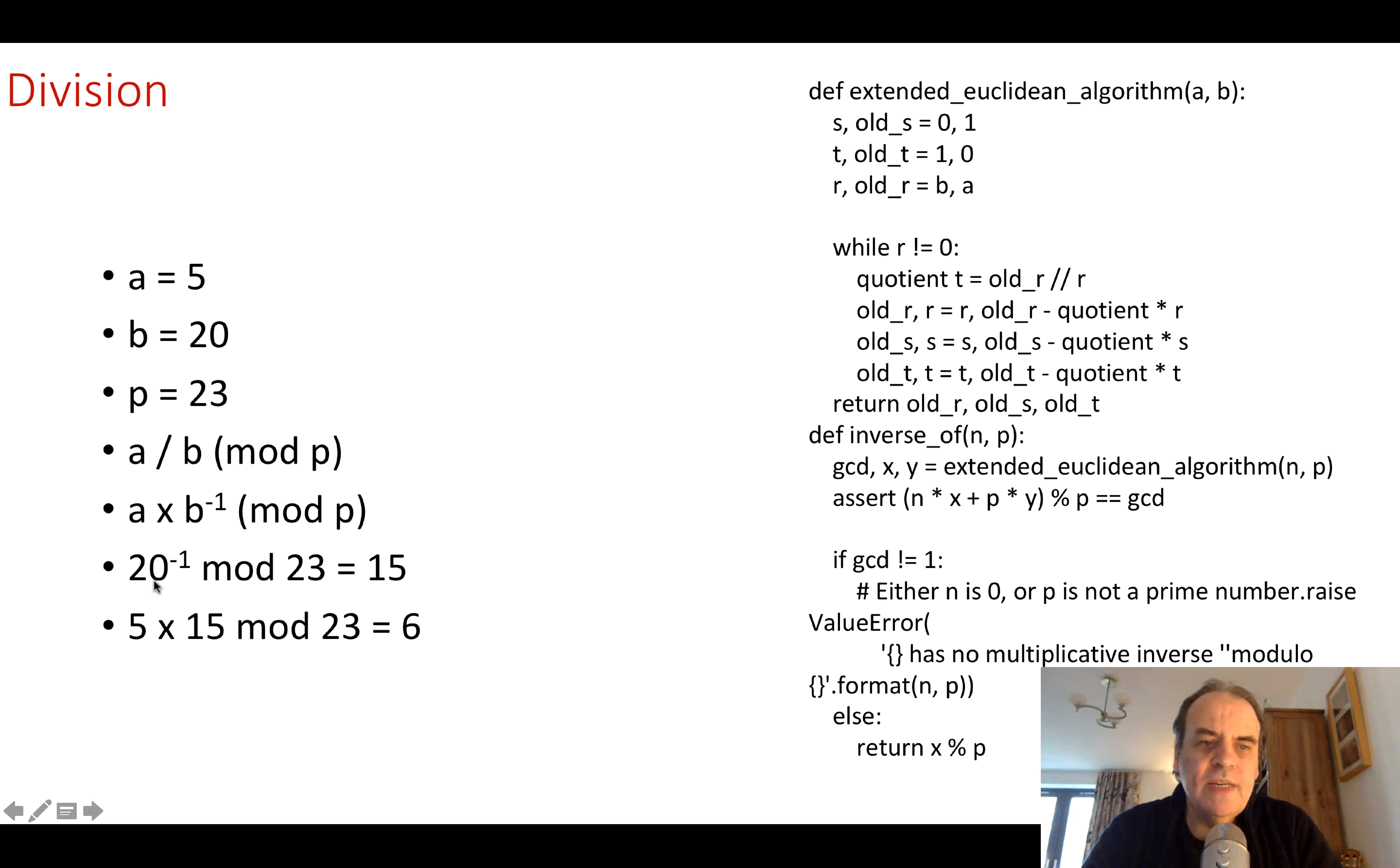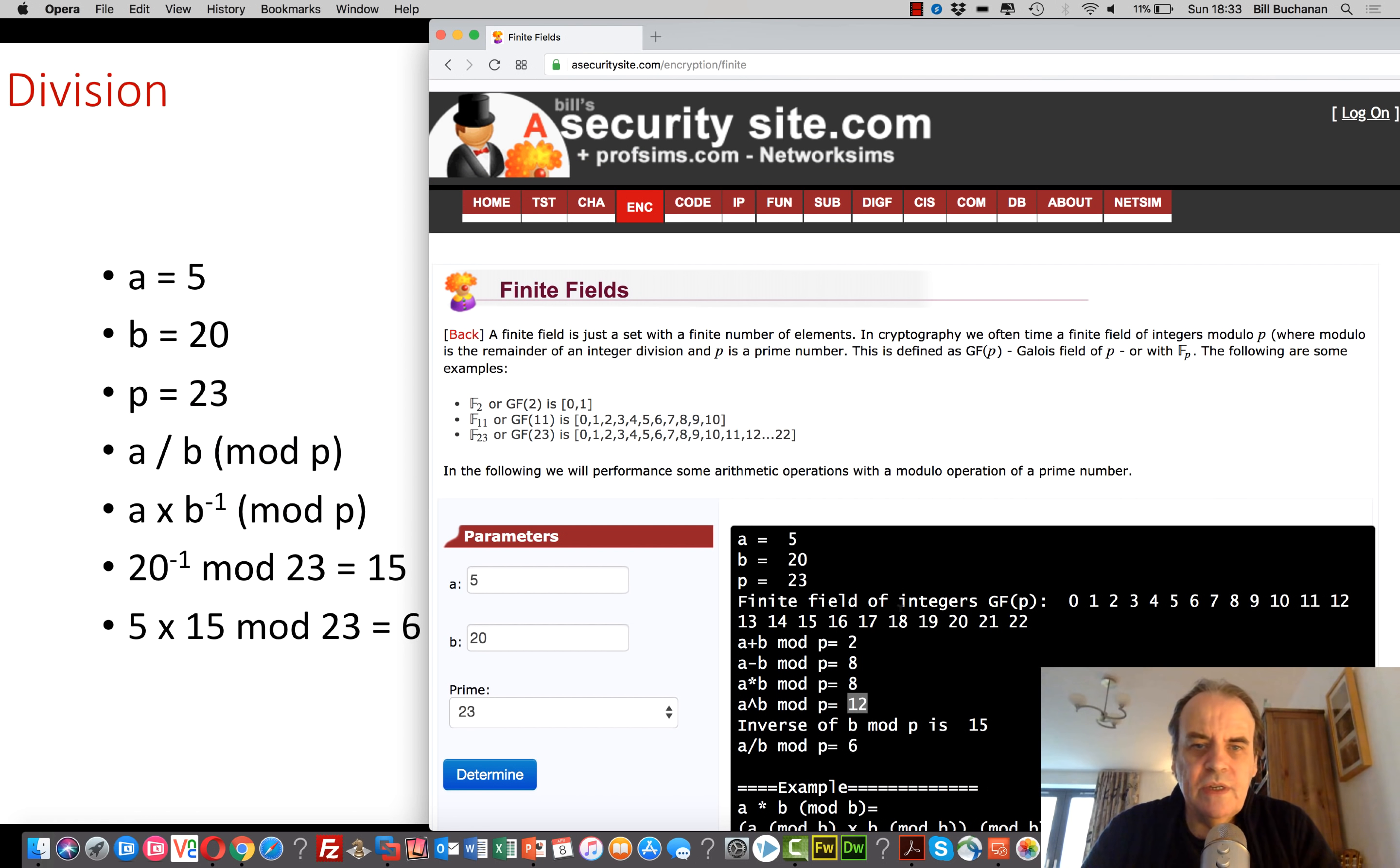So if we have 20, 20 mod 23 is 15 by running it through this little program here. So in this example here, we've got an example, there's the inverse which is 15. We multiply 15 by 5 and then take the mod of 23, and in this case the answer is 6.